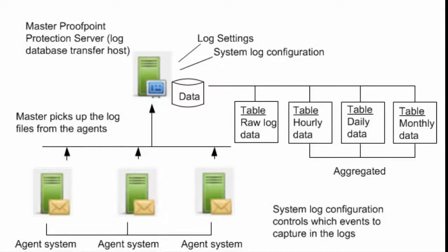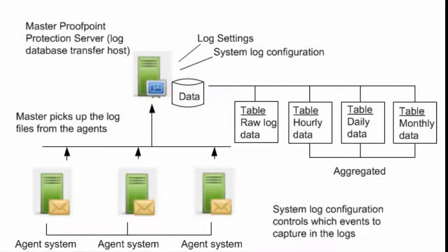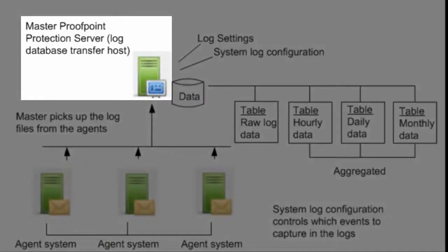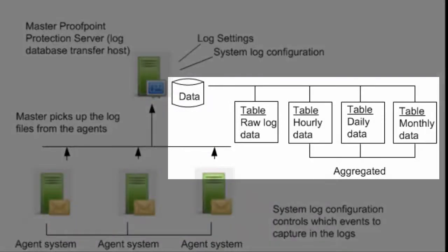In the following diagram, the log files from the agent systems are periodically transferred to the master Proofpoint Protection Server, also known as the Log Database Transfer Host. The Log Database Transfer Host, or ConfigMaster, loads the log files into the database and maintains several tables. Raw log file data from each PPS system is available for generating reports and can be aggregated into hourly, daily, or monthly formats.